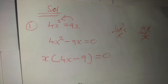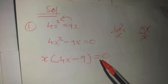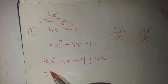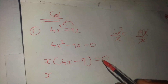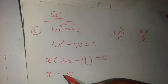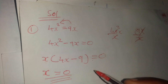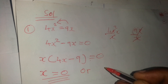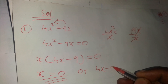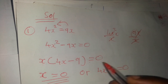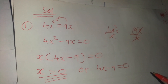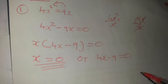Remember we are solving an equation. At this point we will use what we call the zero property, since it is equated to 0. So we say X equals 0 — this is our first value. Or, what is in the bracket: 4x minus 9 equals 0. This is called the zero property.